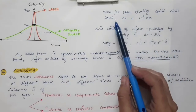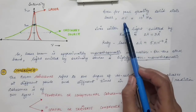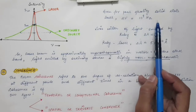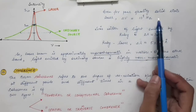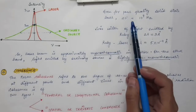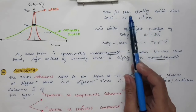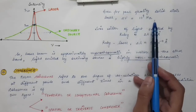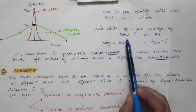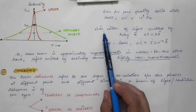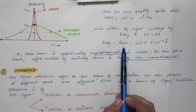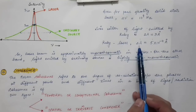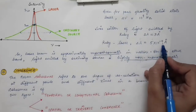Even for a very poor quality solid-state laser, Δν is approximately 10⁹ Hz, compared to 10¹⁰ Hz for an ordinary source at λ = 6000 Å. For a ruby crystal, the light emitted has a line width of 3 Å. However, if a laser is constructed from this ruby crystal — a ruby laser — the line width Δν is only 5 × 10⁻⁴ Å.